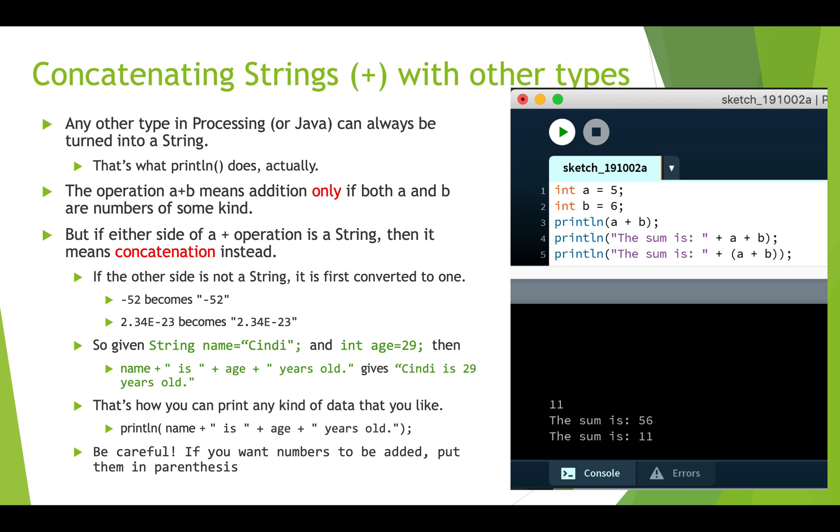So in this example, we have int a equals 5. We have int b equals 6. And then we do println a plus b. In this case on line 3, a plus b, we've just got two numbers and we're adding them. So this actually prints out 11, which is what we expect. On line 4, we have the sum is and then we have plus a plus b. And what's happening here is we do the first plus sign operation and we've got a string on one side, the sum is, and we've got a number on the other side, a.